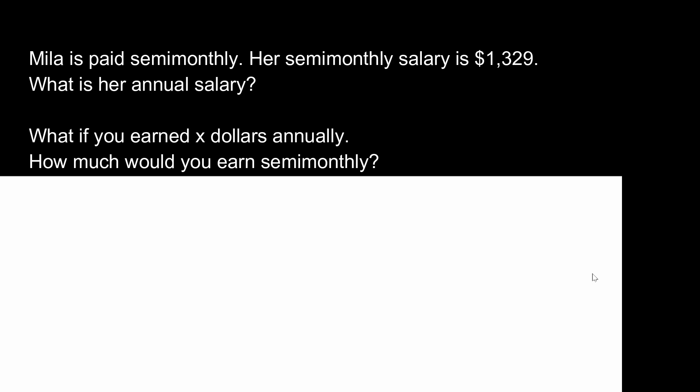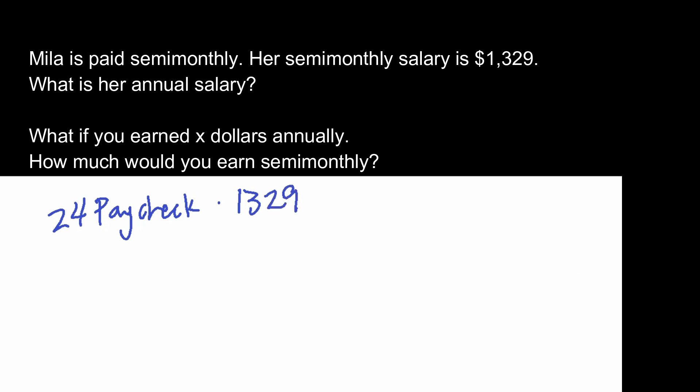Example two: Mila is paid semi-monthly at $1,329 per paycheck. What is her annual salary? Since semi-monthly means 24 paychecks per year, we take $1,329 and multiply it by 24, and voila — she earns $31,896 per year.